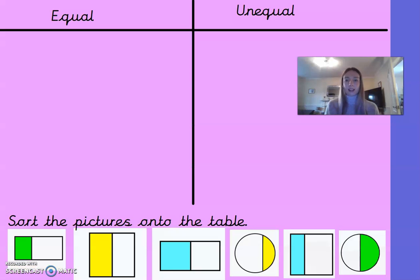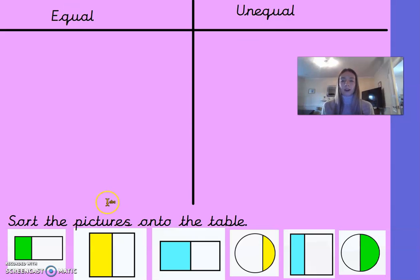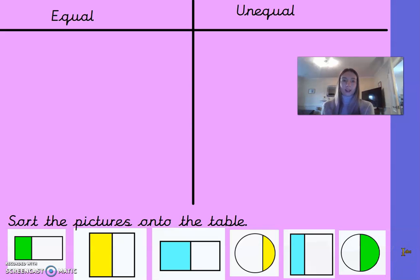Next on the board we have some different pictures to sort into a table with columns for equal and unequal. Pause the video and see if you can decide where each picture goes and why.